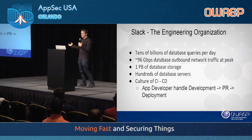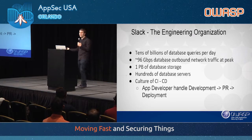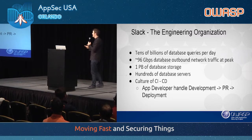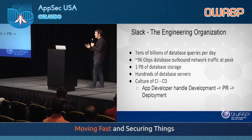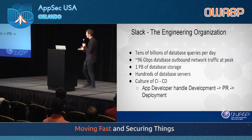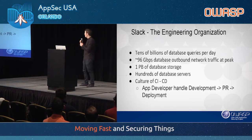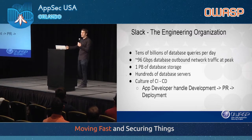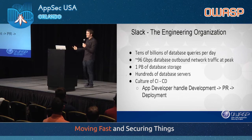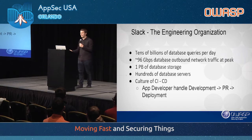The engineering organization has tens of billions of database queries per day, approximately 100 gigabits per second of database network traffic, a petabyte of storage, hundreds of database servers, and a culture of continuous integration and continuous deployment. App developers handle development to pull request to deployment and can do it in about 10 minutes. From getting access to GitHub, you can author, commit, and push to production extremely quickly.